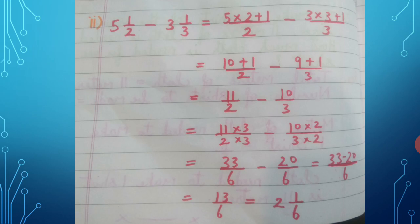Second subtraction sum: 5 and 1 upon 2 minus 3 and 1 upon 3. Convert: 5 × 2 + 1 upon 2, minus 3 × 3 + 1 upon 3. This equals 10 + 1 upon 2, minus 9 + 1 upon 3, giving 11 upon 2 minus 10 upon 3.